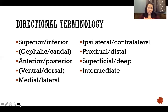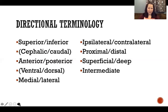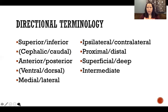Superficial means toward the surface of the body, deep means at a deeper layer than the most superficial. These are easier terms because they're commonly used in everyday English. Intermediate is the only term here that is not in a pair — it simply means that a structure is between two other structures. For example, the nose is intermediate to the eyes, or in the feet we have three cuneiforms and the intermediate cuneiform is the one sandwiched between the other two.